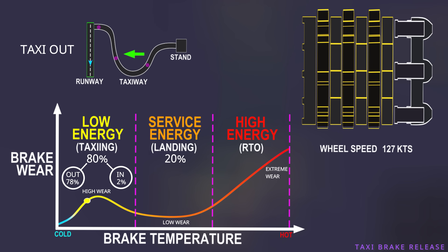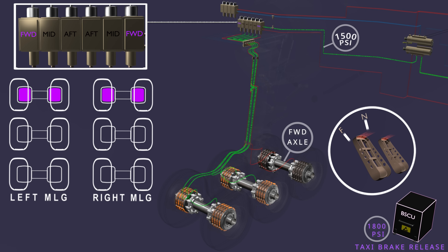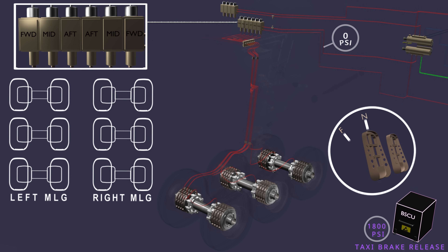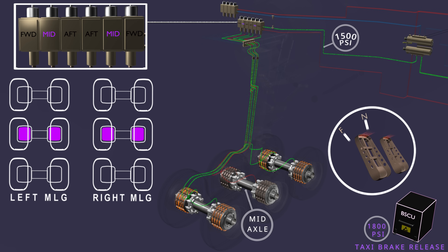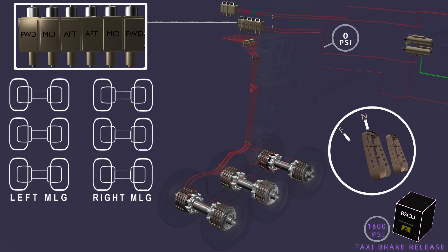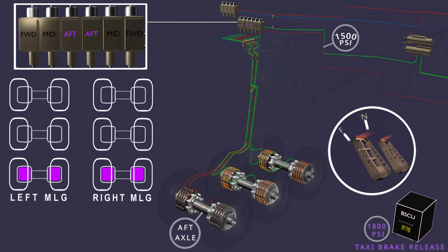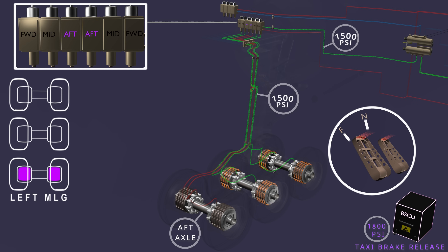To counter this, the Boeing 777 uses the taxi brake release function. Each time the brake pedal is released and reapplied, the brake computer keeps changing the set of wheel brakes selected for the taxi brake release operation. This ensures all brakes are selected for the brake release function and they wear down at approximately the same rate. The skid control function will continue to work on the applied wheel brakes, and if skidding does take place, the brake pressure will be reduced by operating the respective anti-skid valves.